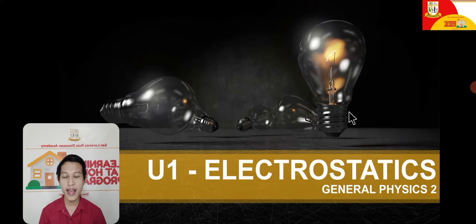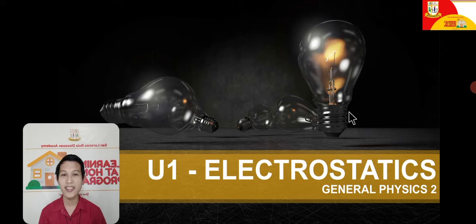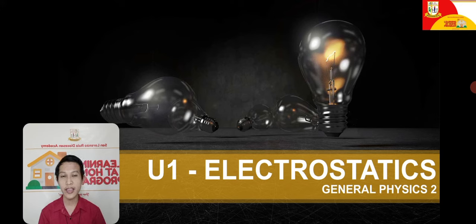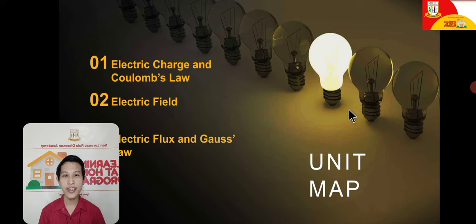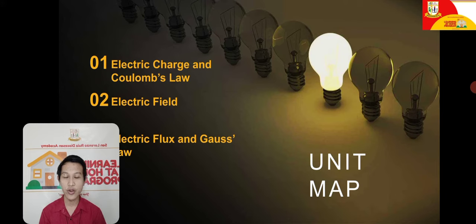Now we are going to discuss General Physics 2, which focuses on electromagnetics and optics. We will start this week with the first unit, which is all about electrostatics. For this unit, we have three main lessons: Lesson 1 — electric charge and Coulomb's Law; Lesson 2 — electric fields; and Lesson 3 — electric flux and Gauss's Law. I hope you are ready because we are about to start our lesson.